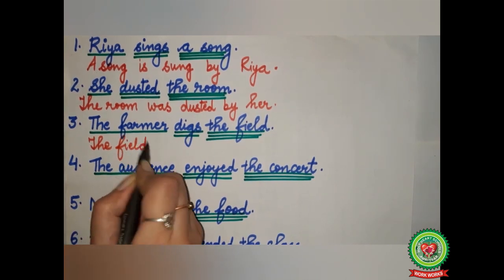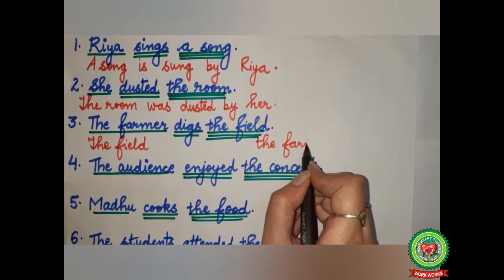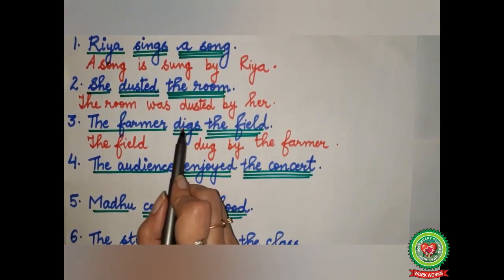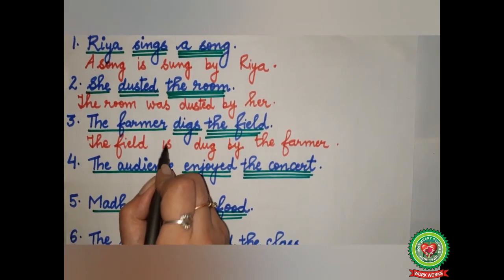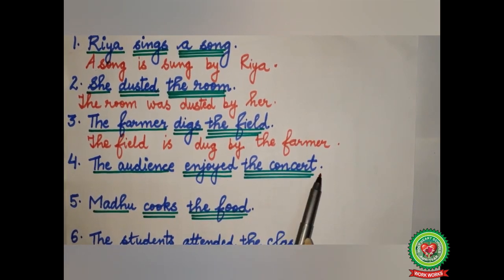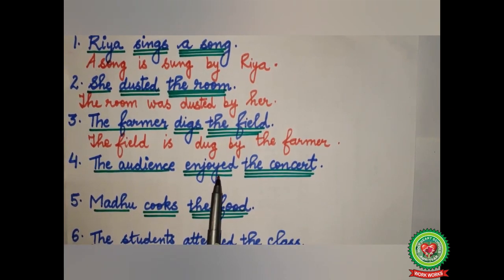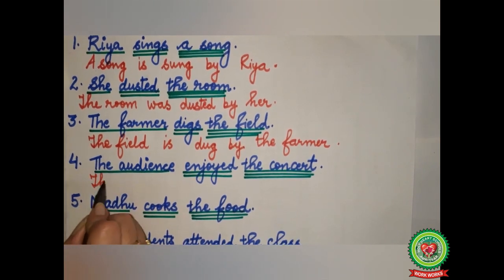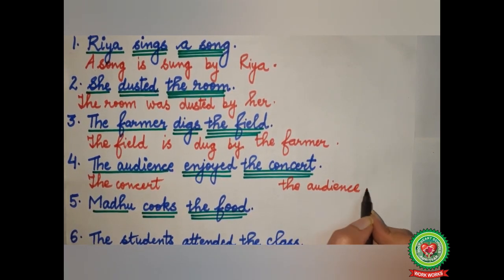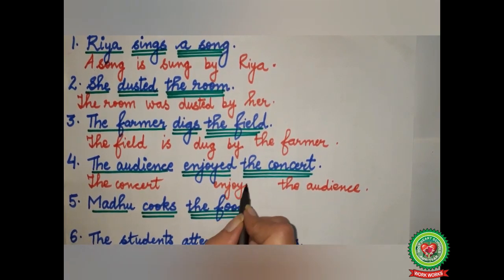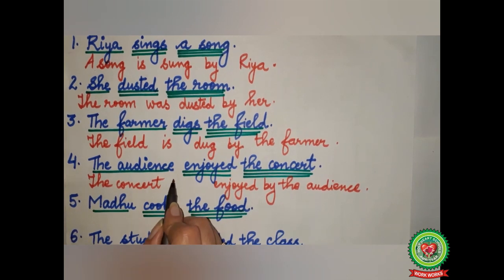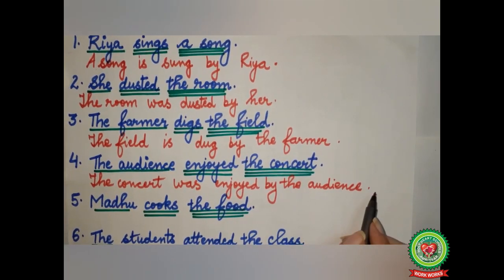Third sentence: 'The farmer digs the field.' The field will come in the beginning, the farmer will go to the last. 'Digs' will change into 'dug.' Before the farmer we add 'by.' Since 'digs' is present form we use 'is.' Answer: 'The field is dug by the farmer.' Fourth sentence: 'The audience enjoyed the concert.' The concert will come in the beginning, the audience will go to the last. 'Enjoyed' is already in its V3 form. 'Enjoyed' is past form, so we use 'was.' Answer: 'The concert was enjoyed by the audience.'